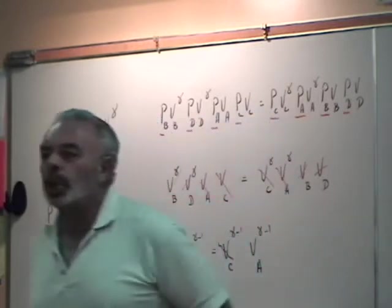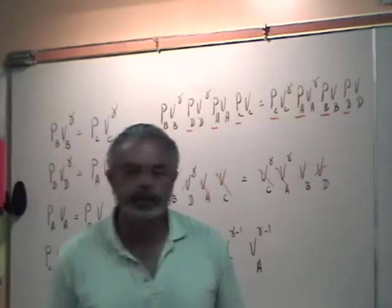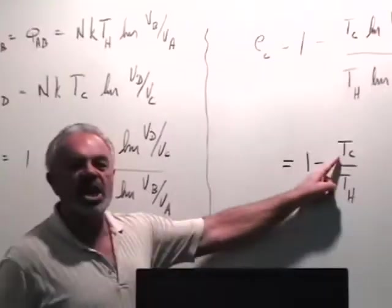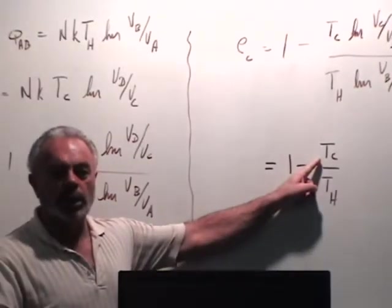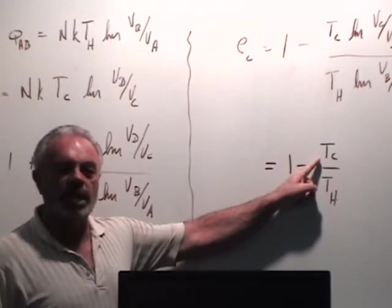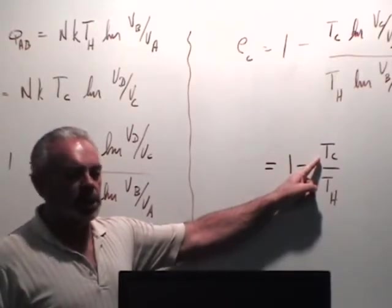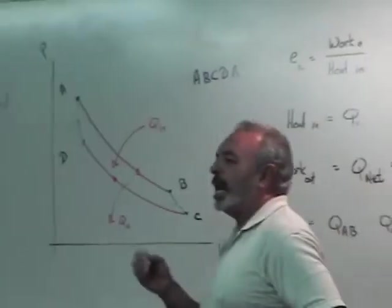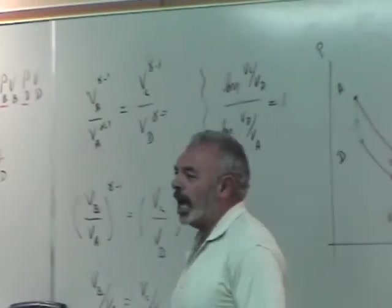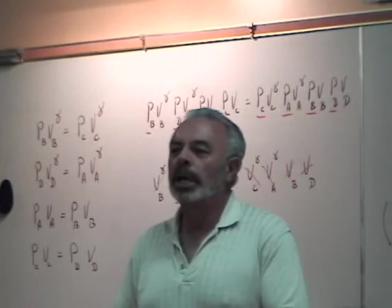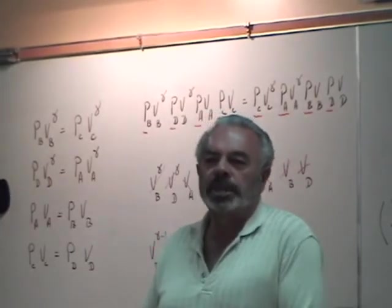Where is your zero degree reservoir? The only way you can have a 100% efficient engine is if the exhaust temperature, the rejection reservoir, is at zero degrees. Not centigrade, these temperatures must be in Kelvin. So, I don't care how complicated and how beautiful, and what an elegant speaker this guy is.